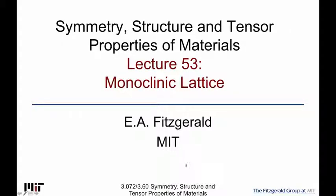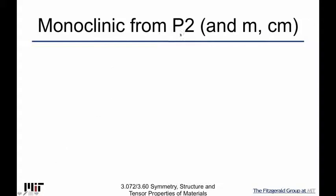We'll move on to the next jump up in our 2D system. The first one we did P1, and that brought us a triclinic lattice. So it makes sense to go to P2, and that's going to bring us to the monoclinic lattice. We're also going to see later that M and CM are also compatible with this.